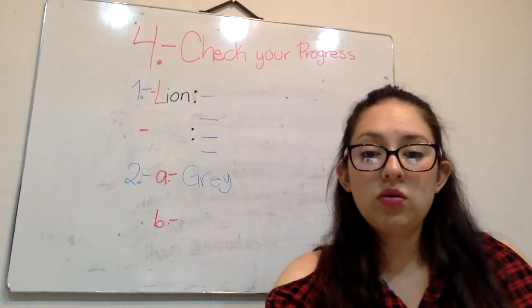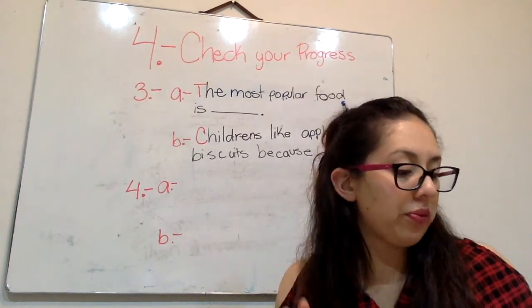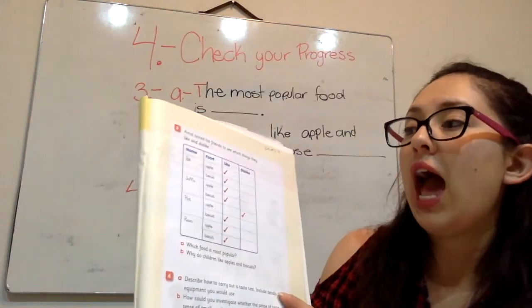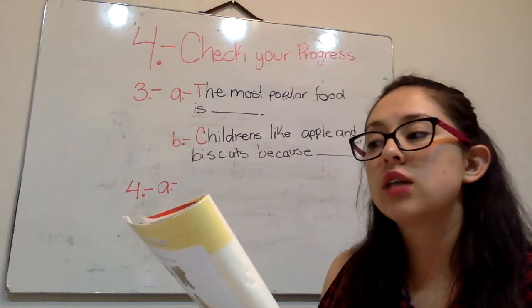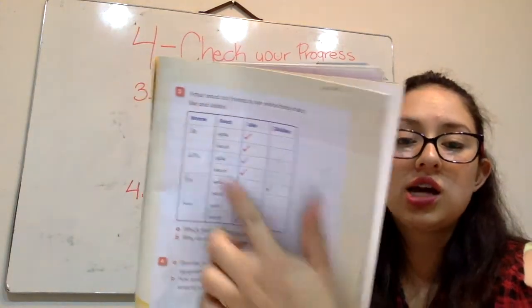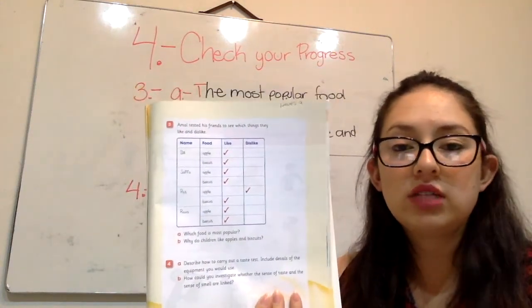Ahora vamos a ver el número 3 y 4. Aquí en el número 3 dice Emil tasted his friends to see which things they like and dislike. So we have this chart, this chart telling what they like and what they didn't like.